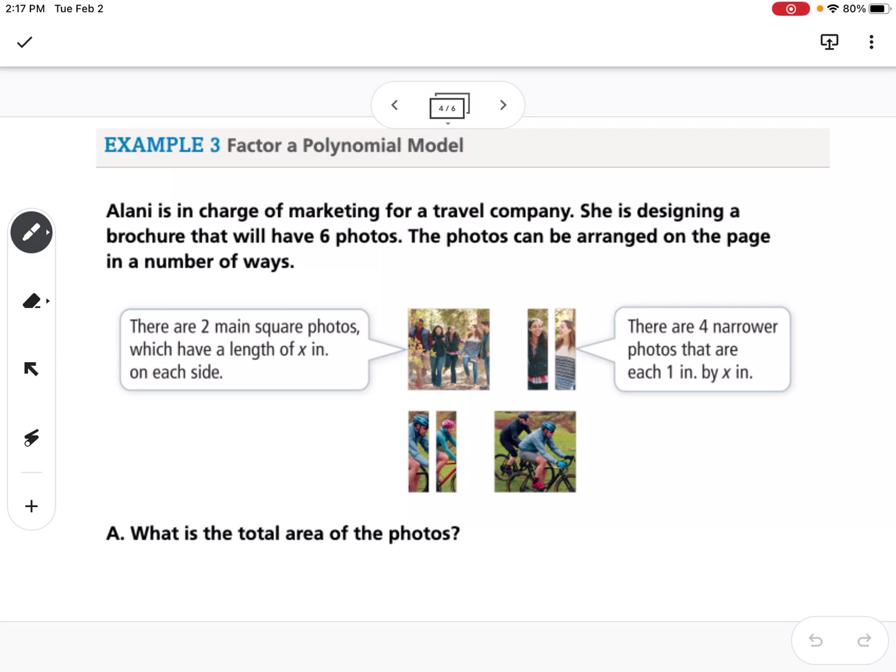Our final example says Alani is in charge of marketing for a travel company. She is designing a brochure that will have 6 photos. The photos can be arranged on a page in a number of ways. So it says we have 2 squares that are x by x, and we have 4 that are 1 by x.